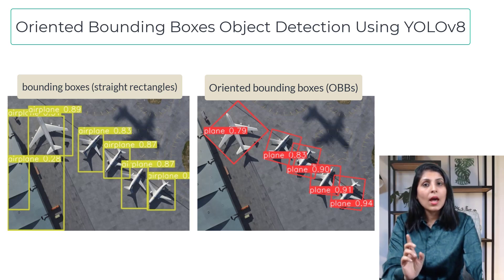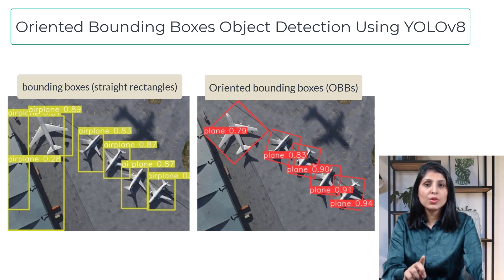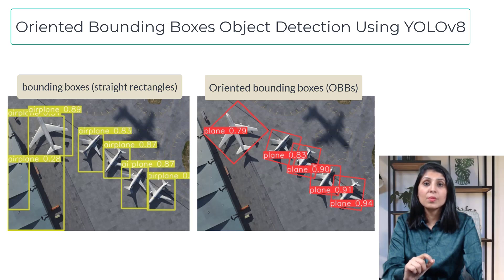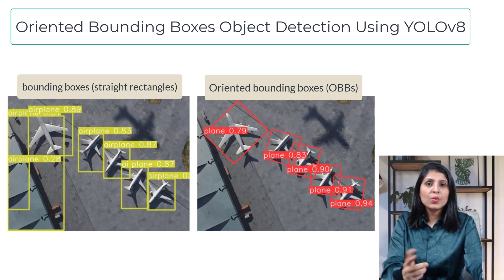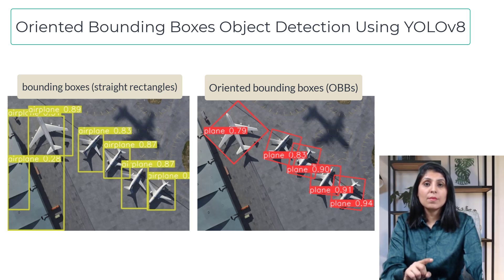Bounding boxes and oriented bounding boxes are both used in computer vision for object detection tasks. The difference is that using bounding boxes you may not accurately represent the orientation of objects that are rotated or have irregular shapes, but when you use OBB we can achieve that. However, computing OBBs can be more complex and computationally expensive compared to bounding boxes.